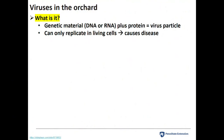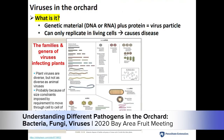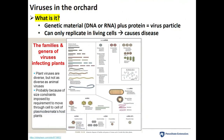Viruses are just genetic material — DNA or RNA — wrapped in protein, and they can only replicate in living cells. That's how they cause disease. This is just a snapshot of the diversity of plant viruses out there, to illustrate that there's a huge diversity and they come in all different shapes and sizes — from super tiny to super long, looking like noodles or little geometric soccer balls.